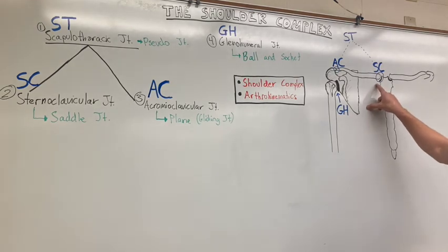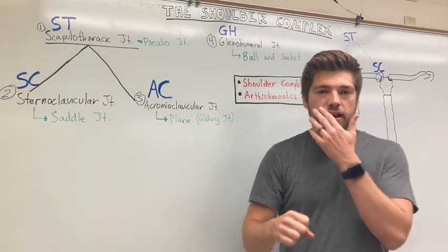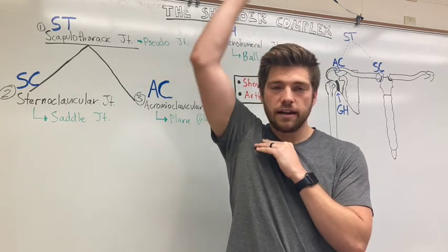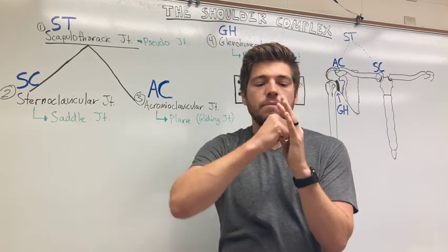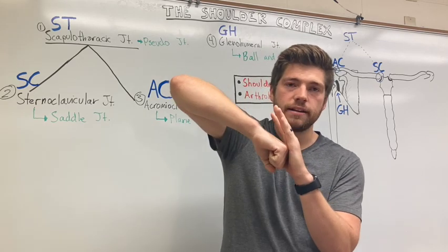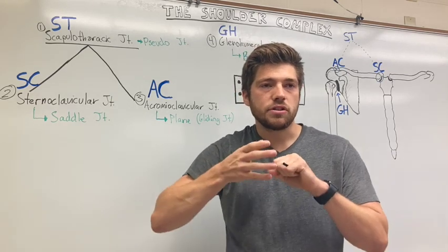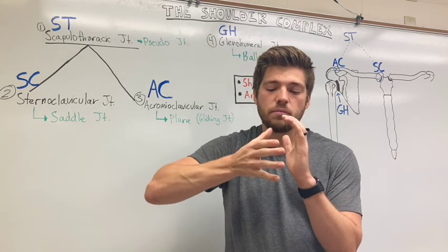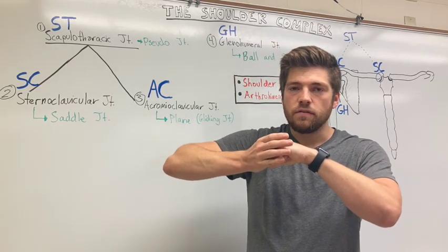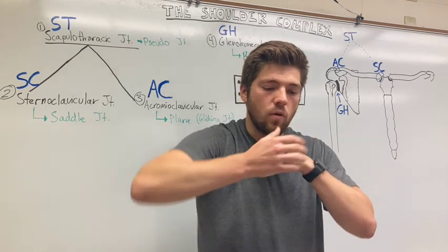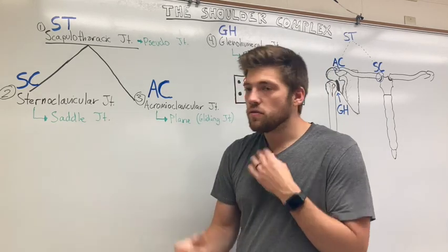We're going to start with the SC joint or the sternoclavicular joint. It's the complicated one because it's a saddle joint and it moves differently depending on which plane you're talking about. In the frontal plane, when you do elevation or depression of the SC joint, it moves like a ball and socket — it's going to roll up and slide down for elevation, or roll down and slide up for depression. Then it switches from the clavicle being convex to the clavicle being concave, and it's going to roll and slide forward for protraction, and roll and slide backwards for retraction at the SC joint.